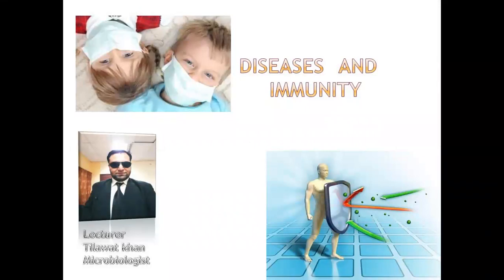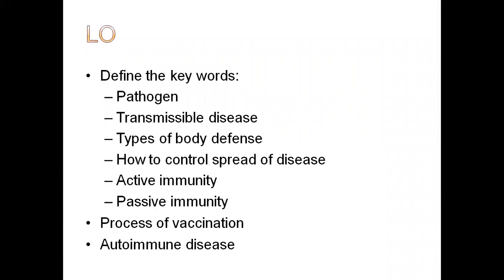Dear students, today we are going to discuss about disease and immunity. After watching this lecture, you would be able to know about pathogen and transmissible disease, body defense system and how to control spread of disease. You should also know about types of immunity, active immunity and passive immunity, the process of vaccination, and autoimmune disease.